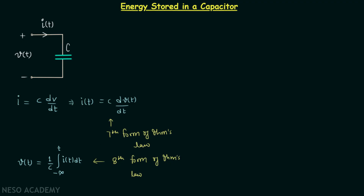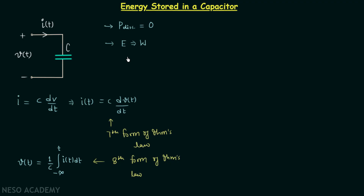Now we will move on to the derivation of energy stored in a capacitor. We know an ideal capacitor will not dissipate any power, therefore the power dissipated by an ideal capacitor is equal to zero. Hence we can say that the capacitor will store energy in the form of its electric field. There is a close relationship between energy and work done — energy is the capacity of doing work.